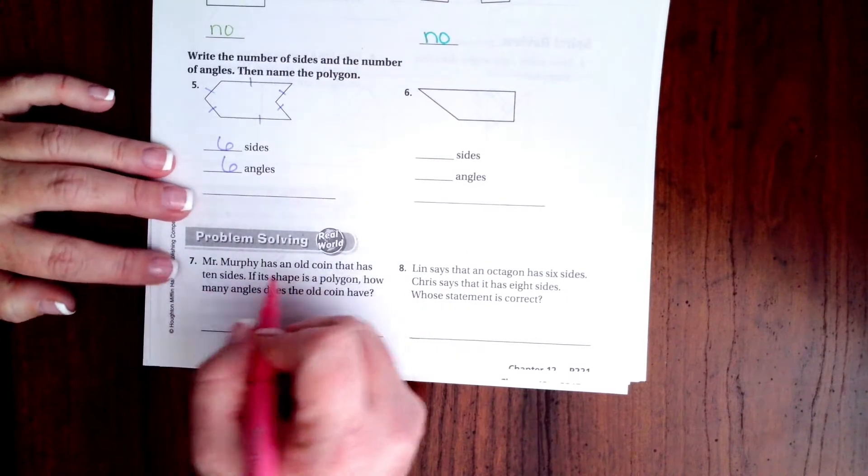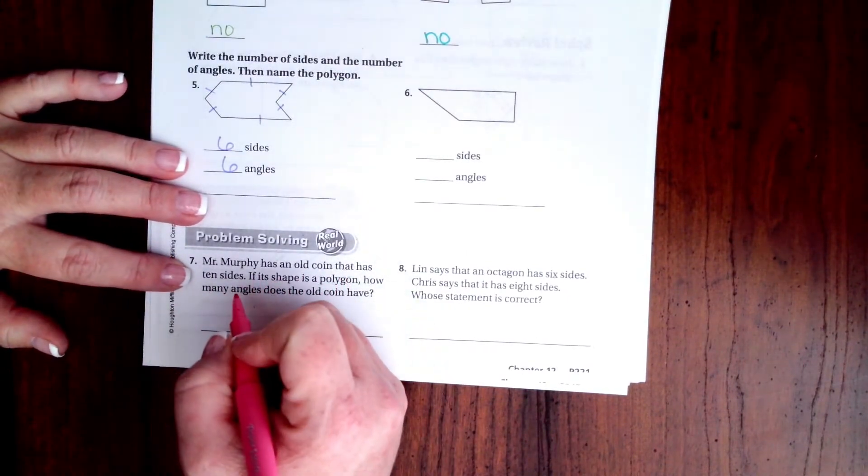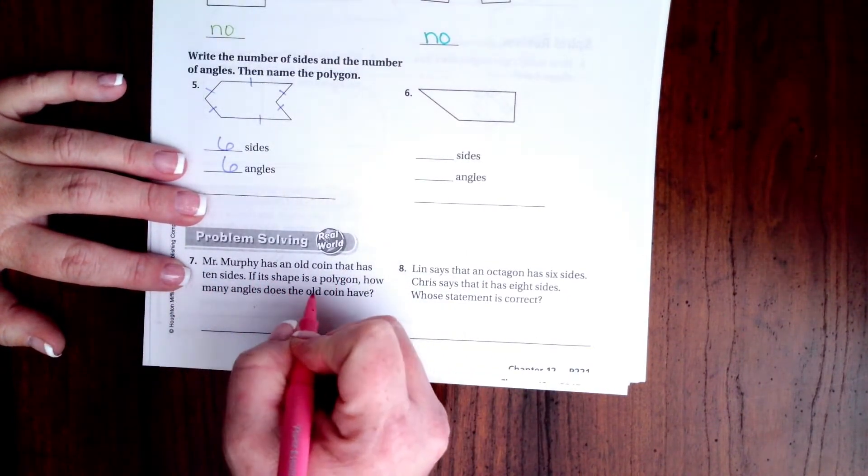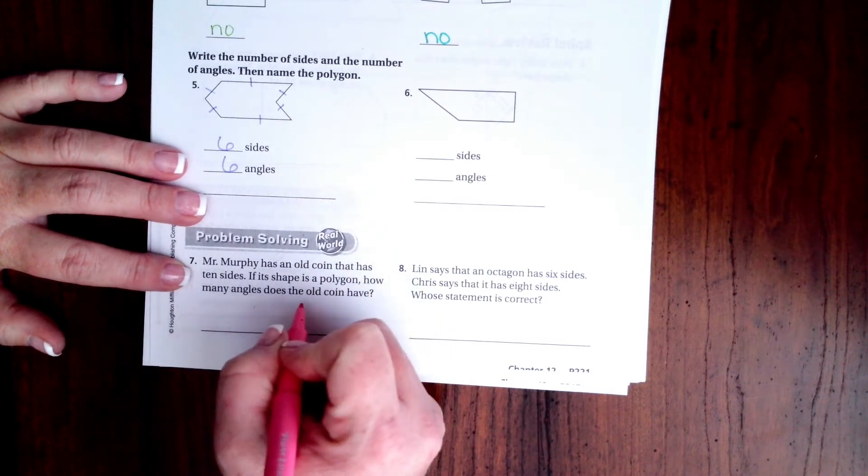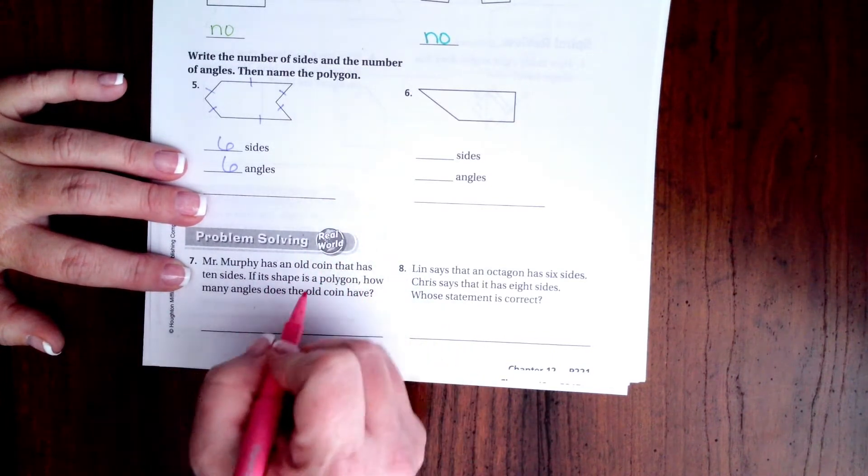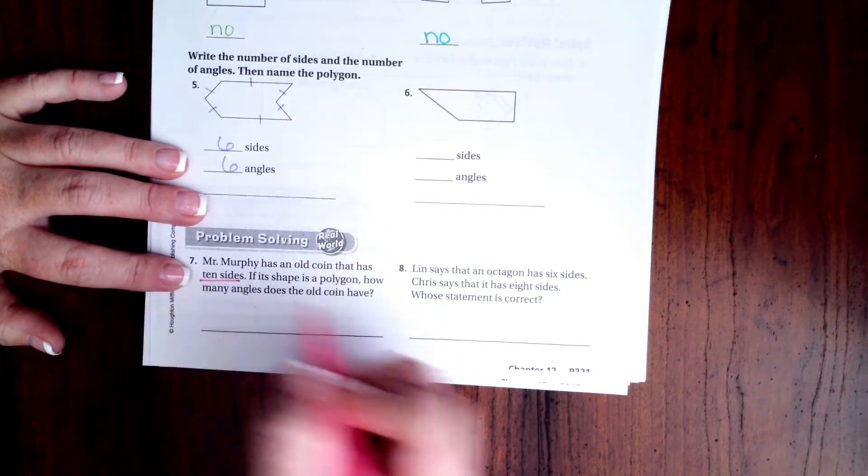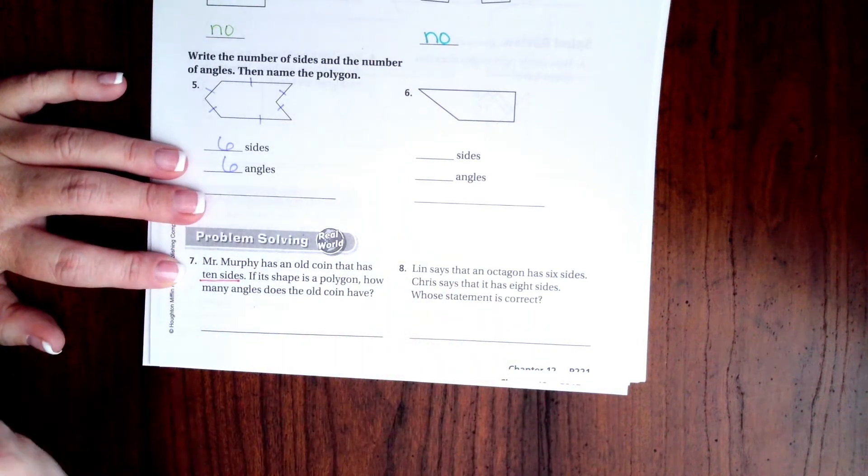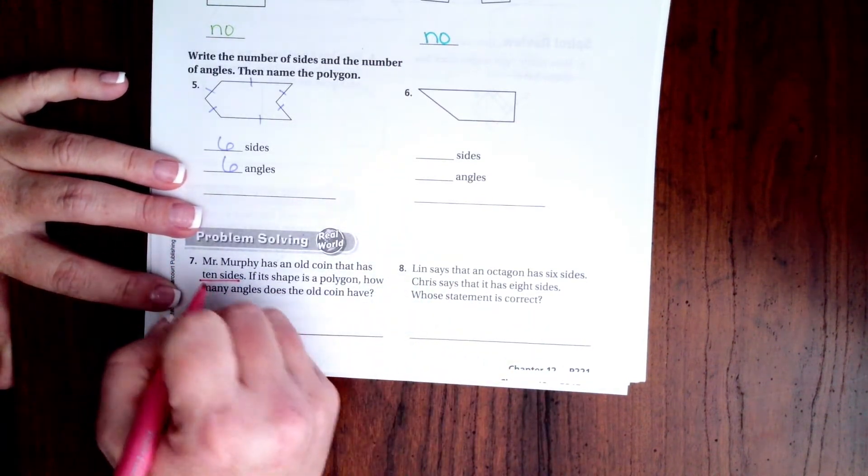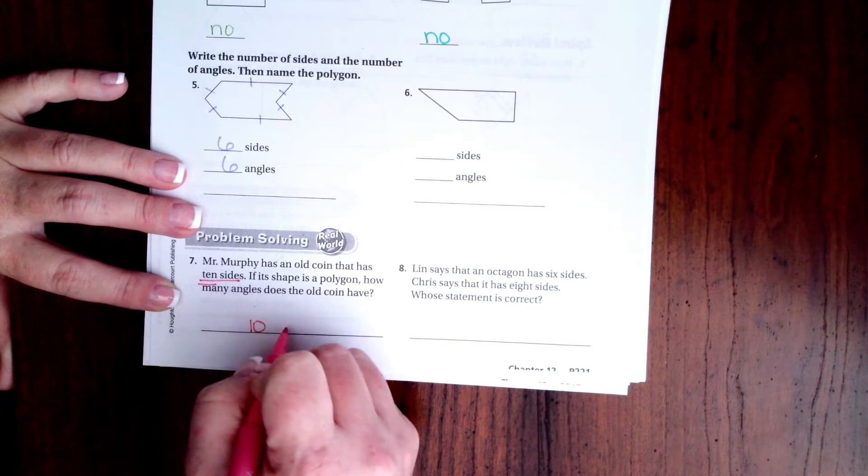We're going to go down and do number seven. Mr. Murphy has an old coin that has ten sides. If its shape is a polygon, how many angles does the old coin have? Remember sides and angles match, so if it has ten sides it's going to have ten angles.